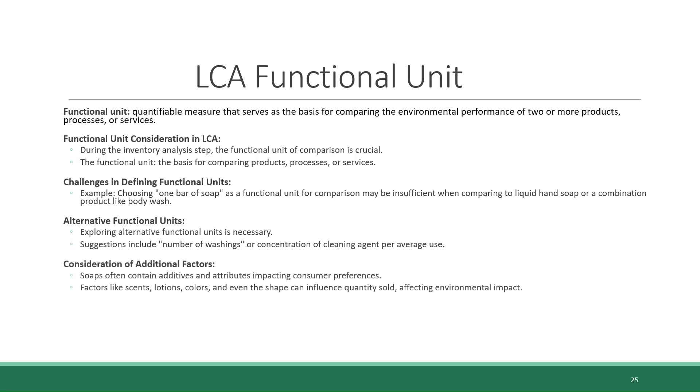Soaps often contain additives and attributes that influence consumer preferences, even if they don't directly affect cleaning effectiveness. Factors like scents, lotions, colors, and even the shape of the soap bar can impact the quantity sold, which in turn affects the environmental impact. The chemicals used for additives can have varying environmental impacts. Factors like scent and color, while not directly affecting cleaning effectiveness, can still influence the overall environmental footprint of a soap product.